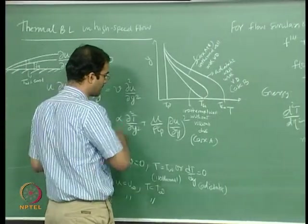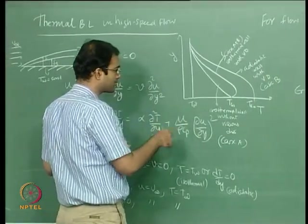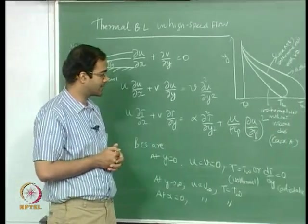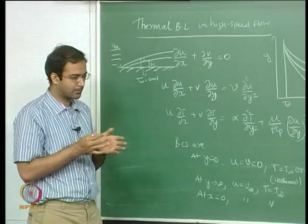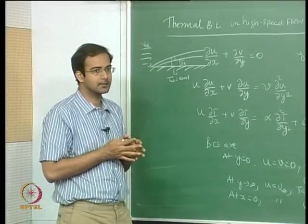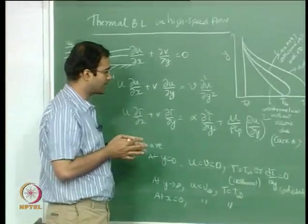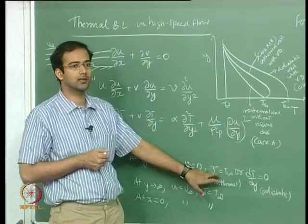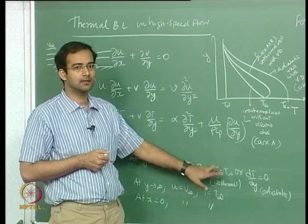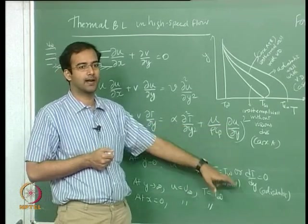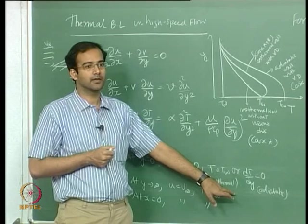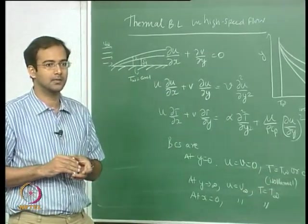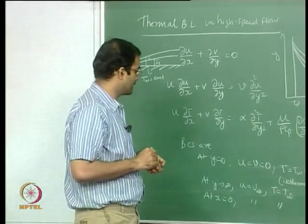You can consider this problem as two sub-problems. Since the energy equation is quasi-linear, you can actually split it into two sub-problems with two different boundary conditions. One problem is where you do not take the viscous dissipation term into account and assume a purely isothermal wall. In the other, you take the viscous dissipation into account and maintain an adiabatic wall. In this case, even with an adiabatic boundary condition, heat transfer is possible because of the viscous dissipation.